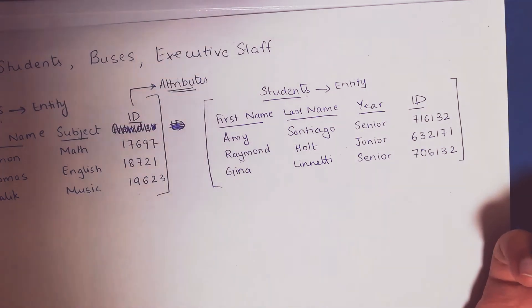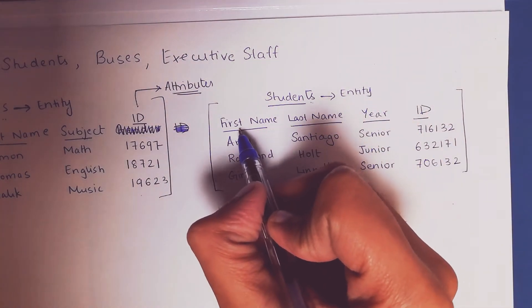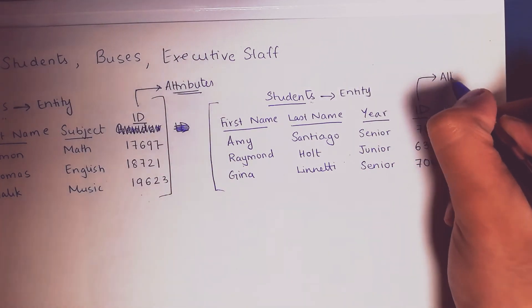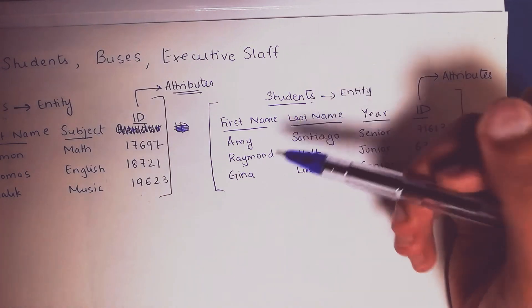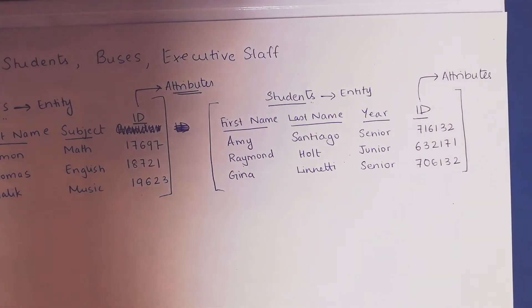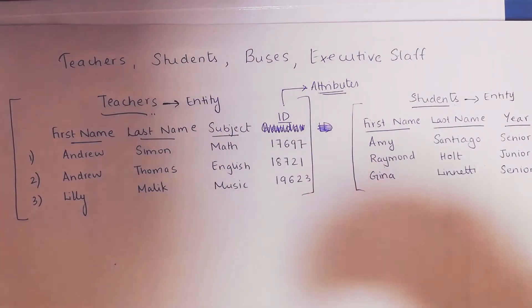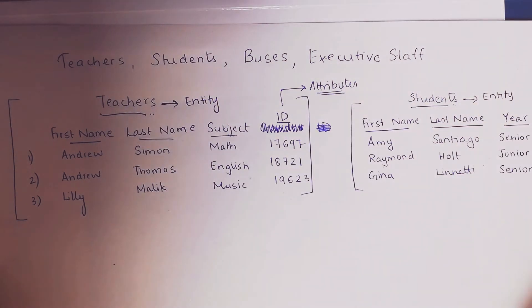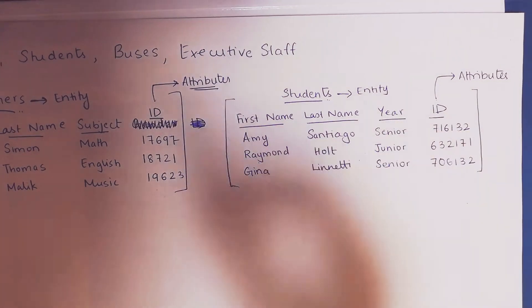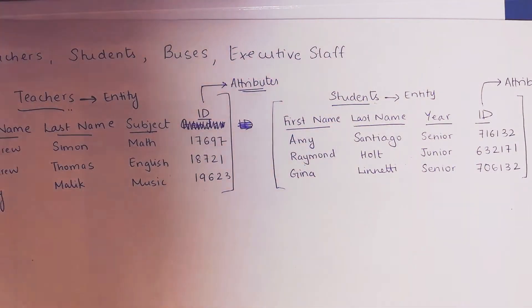For students, we have attributes too. The first name, last name, year, and ID — all of these are the attributes of the students. They help us know more about the students, giving names and identity to the entity. Every table, every entity — the table itself is known as the entity — and every entity will have a unique identifier, also called the primary key. We can pick out a teacher or student based on their unique identifier or primary key.